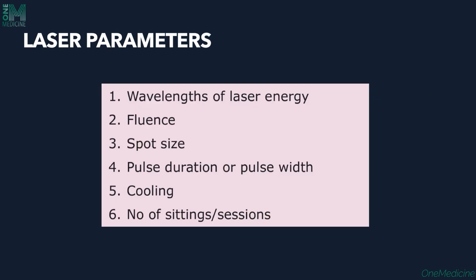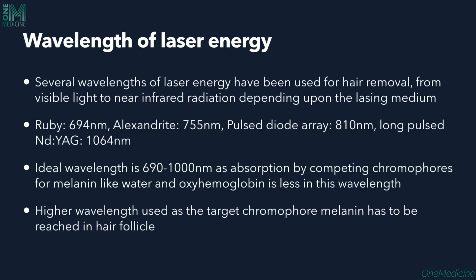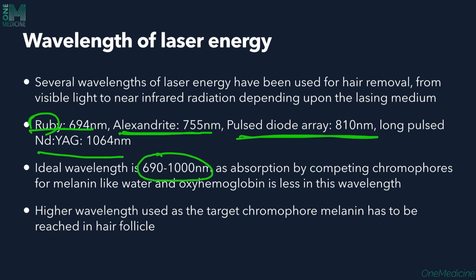Certain parameters to consider are the wavelength of the laser light, fluence, spot size, pulse duration or pulse width, cooling, and number of sittings required. Several wavelengths have been used for hair removal: ruby at 694 nm, alexandrite at 755 nm, pulsed diode laser commonly used at 810 nm, and Nd:YAG at 1064 nm. The ideal wavelength for laser hair removal is between 690 to 1000 nm, as competing chromophores like water and oxyhemoglobin are minimal at this wavelength. Higher wavelength is used to target the chromophore melanin because it must reach the hair follicle.